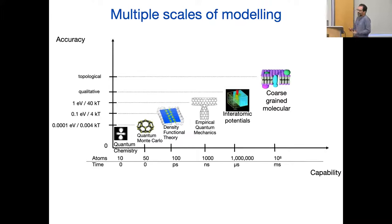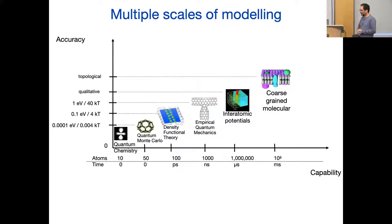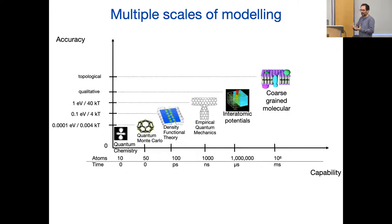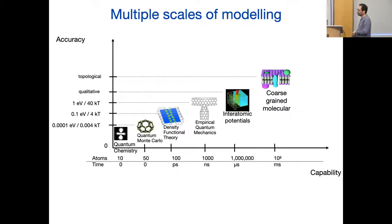We can solve the Schrödinger equation, and the approximations that we make when we write that down are very well controlled. So as long as there are no nuclear processes — the atoms don't change their position in the periodic table — the Schrödinger equation for the electrons and the nuclei is more or less true, so we can solve it. Take a moment to contemplate that: we're not observing the world and trying to figure out what's going on — we actually know how the world works.